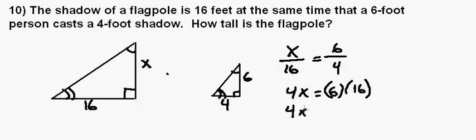So we have 4X is equal to 96, divide both sides by 4, and we wind up with X being equal to 24 feet.